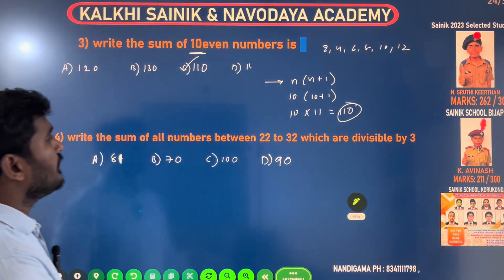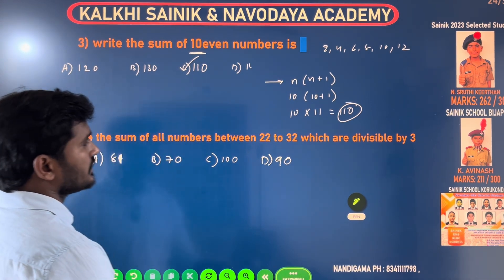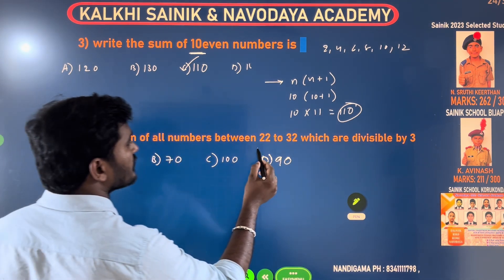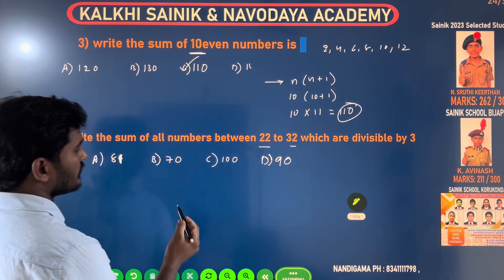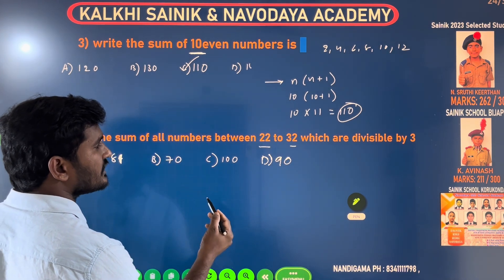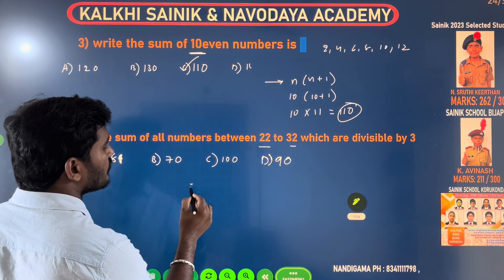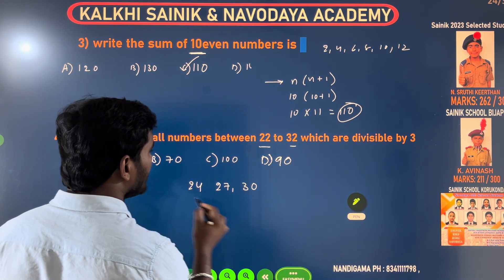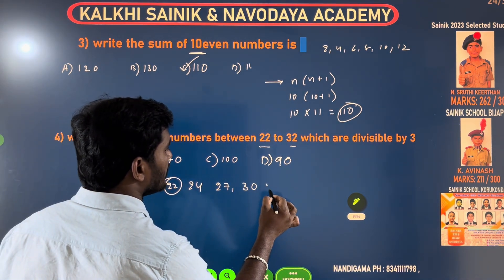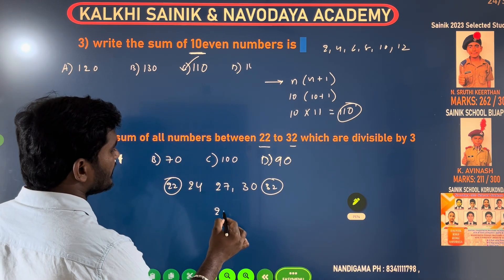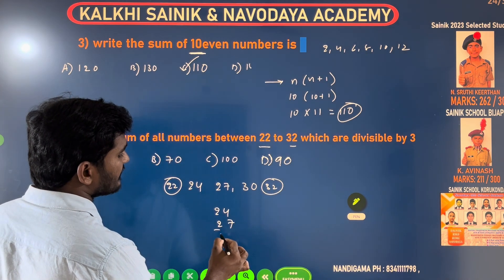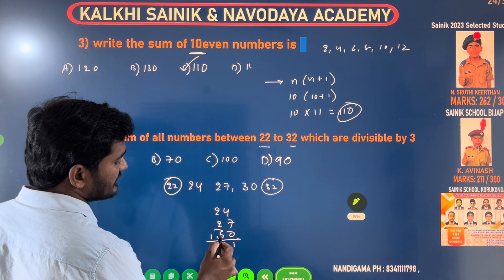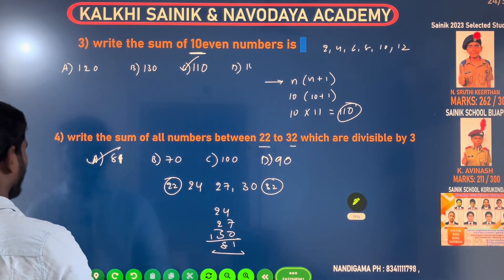Next one: Write the sum of all numbers between 20 and 32 which are divisible by 3. From the 3 times table in that range: 3×7=21, 3×8=24, 3×9=27, 3×10=30. Between 22 and 32, the valid numbers are 24, 27, and 30. Their sum: 24 + 27 + 30 = 81. Option A is the right answer.